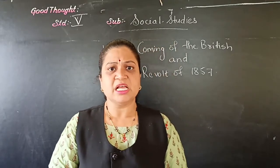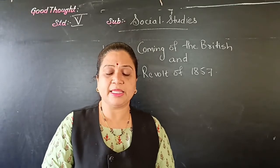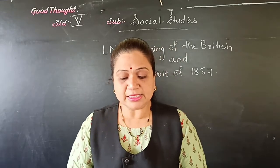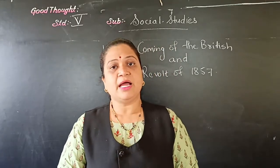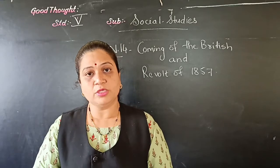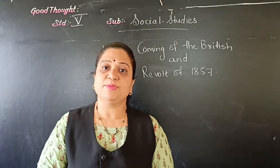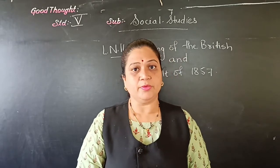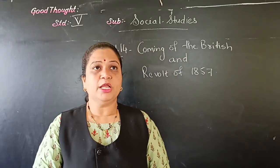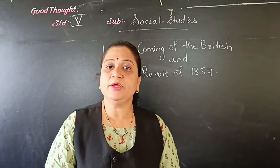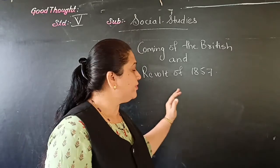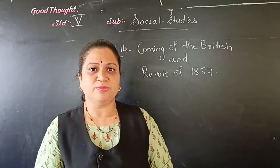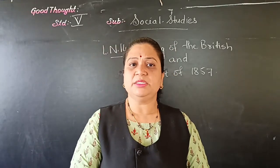Indian rulers such as Rani Lakshmi Bhai, Tatya Tope, and Nana Saheb also joined the rebels. Rani Lakshmi Bhai was killed in this revolt and Nana Saheb continued the battle. The revolt of 1857 continued for two years before it was crushed by the Britishers.